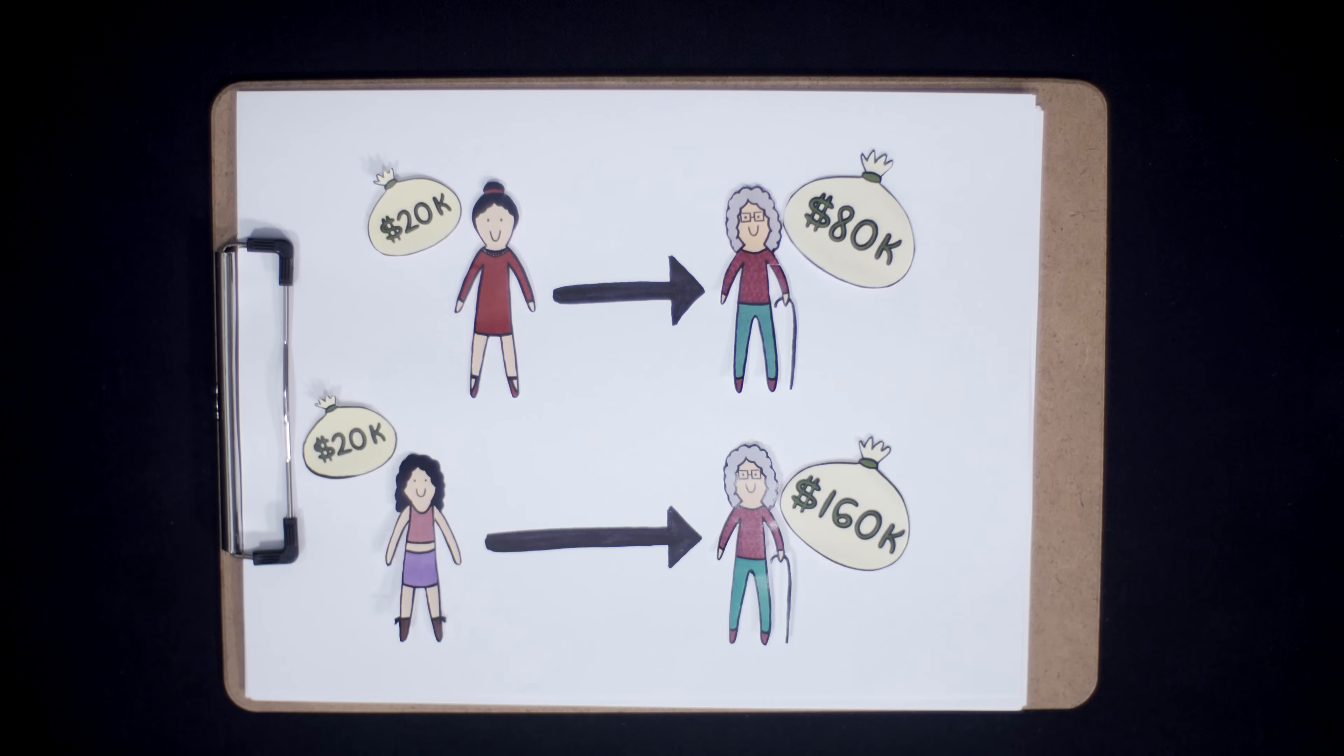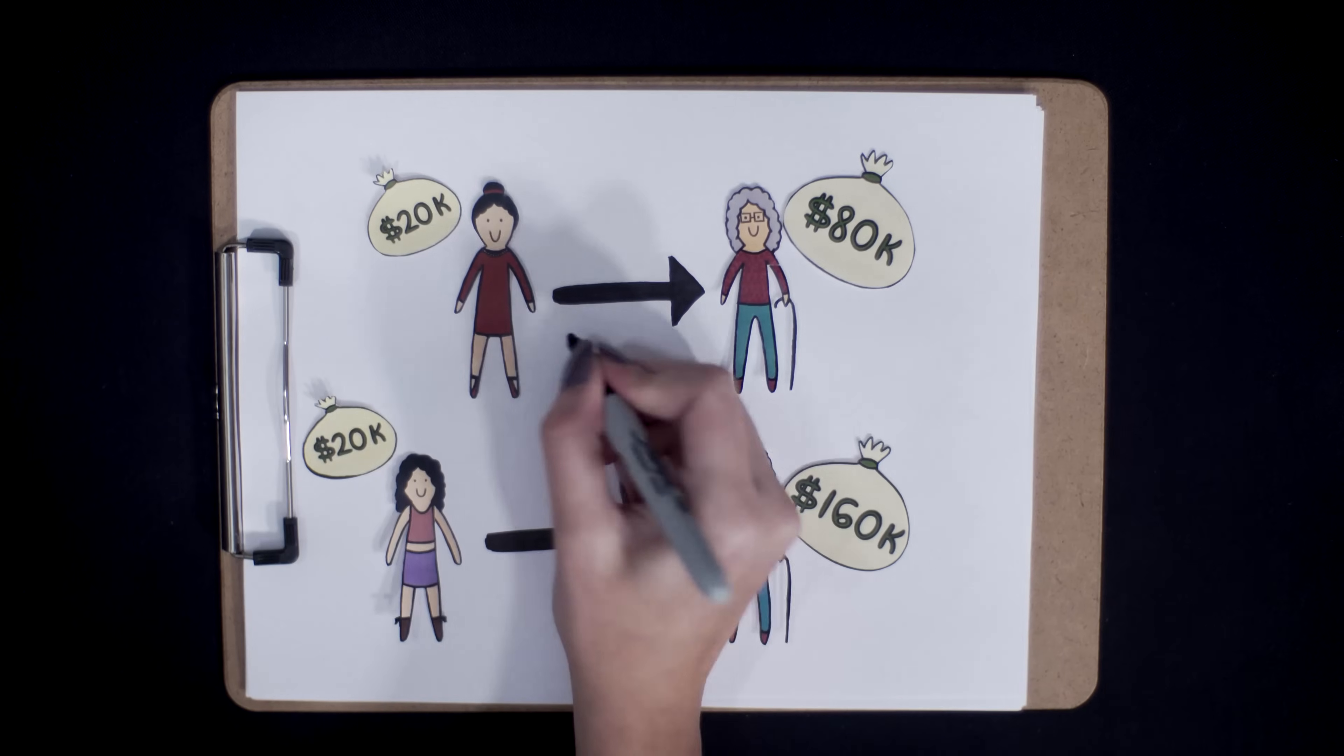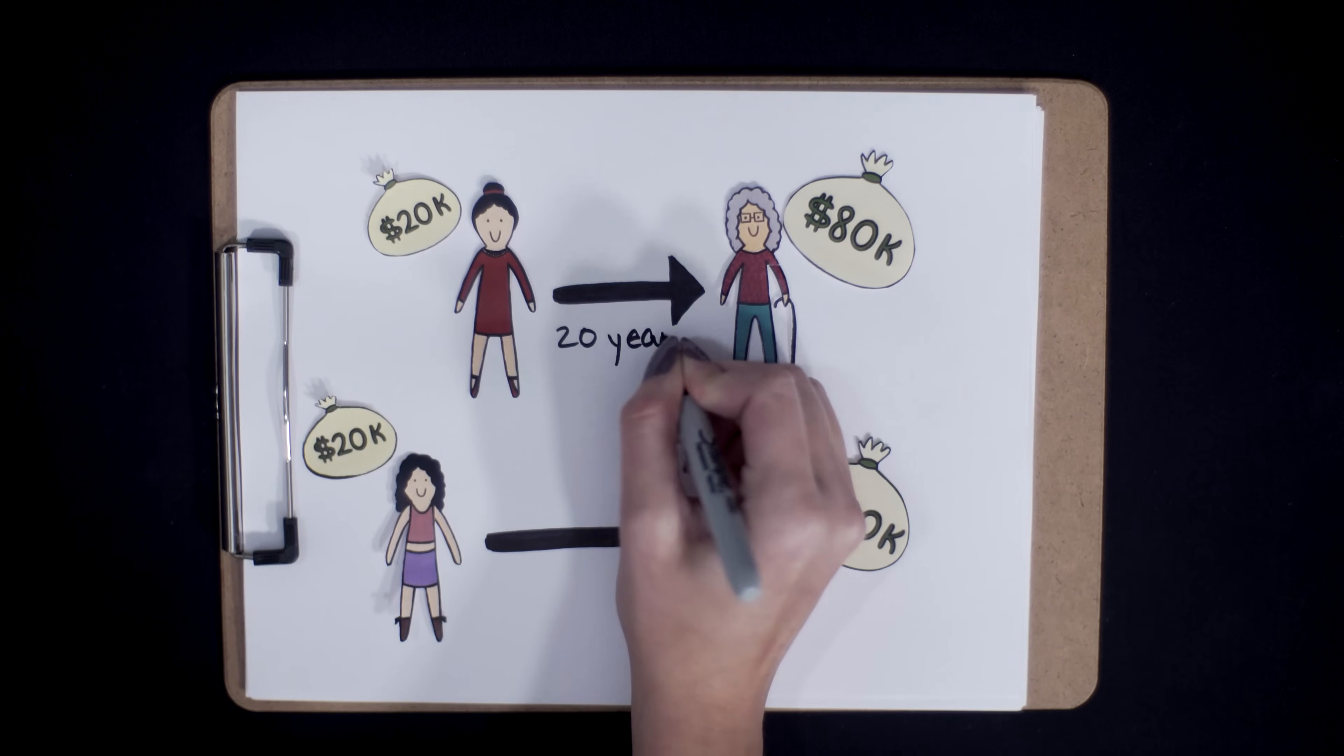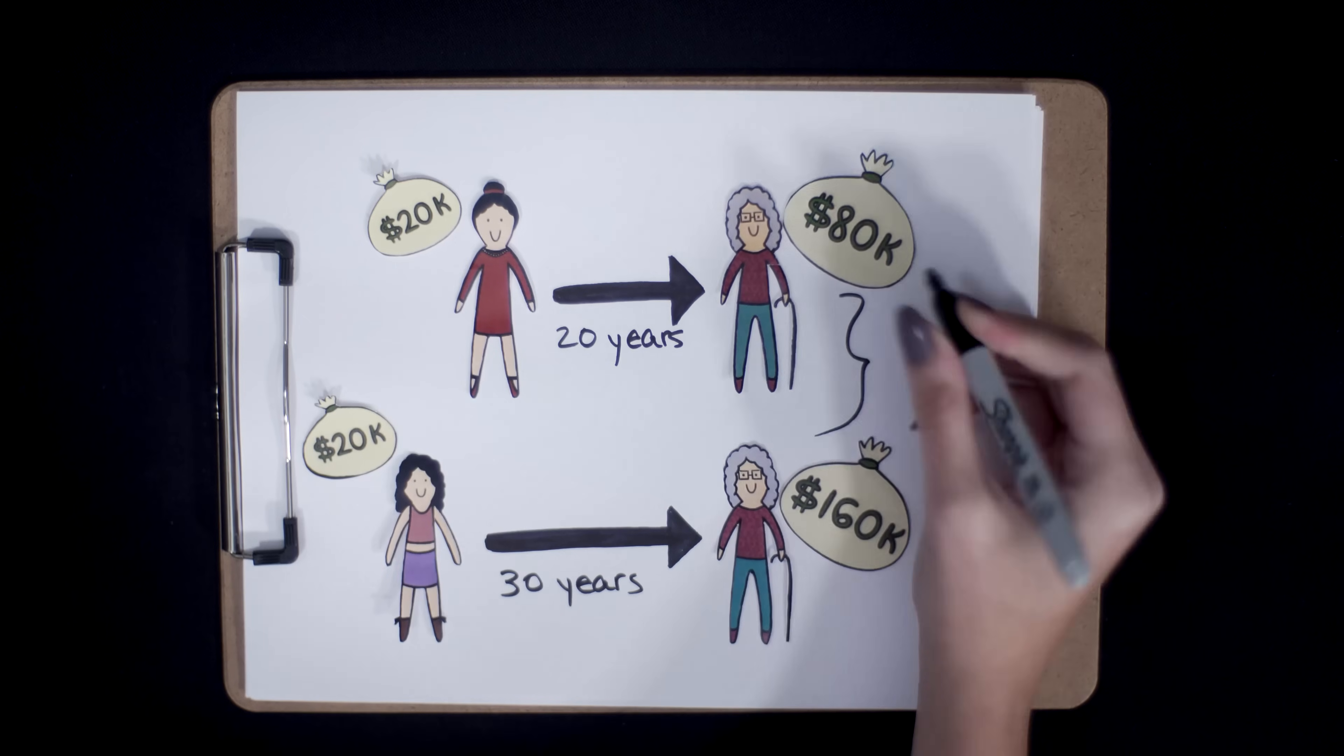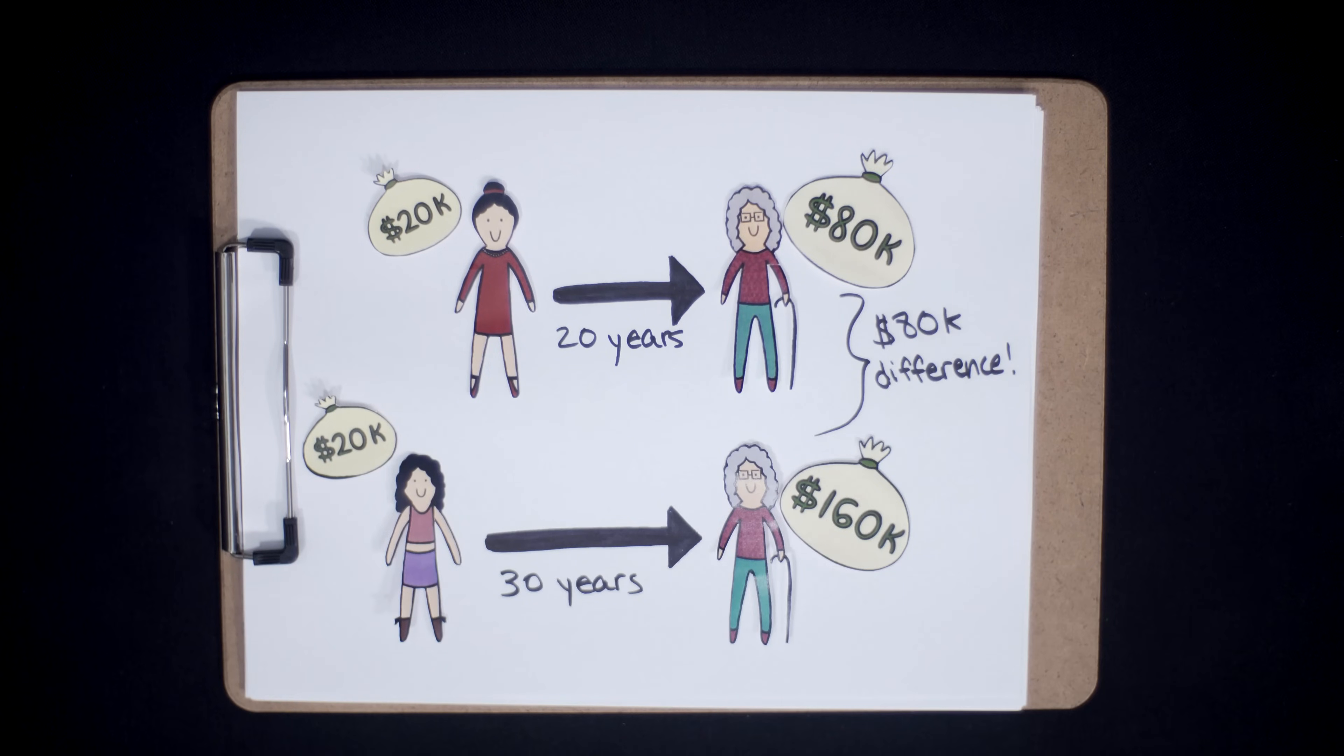So let's recap. Both Marys, Meticulous and Myopic, invested the exact same amount, $20,000, at the exact same rate of return, 7%. The only difference between these two scenarios is time. Meticulous Mary started investing just 10 years earlier, and that led to $80,000 more dollars. How can that be?